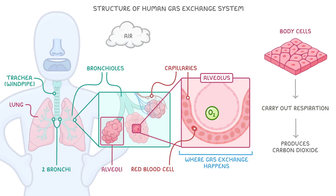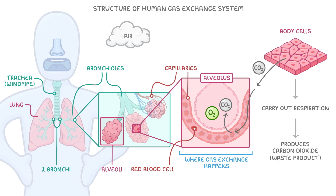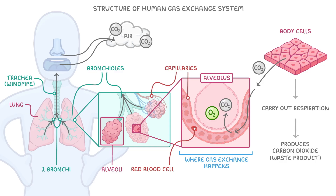It's important to remember that respiration produces carbon dioxide as a waste product, and it travels in the opposite direction to oxygen. It moves from the body cells into the blood, which carries it to the capillaries surrounding the alveoli. Once it's moved into the alveoli, the air containing carbon dioxide moves through the bronchioles, bronchi and trachea, and finally out through the nose or mouth and into the air when we exhale.